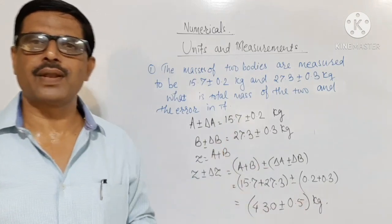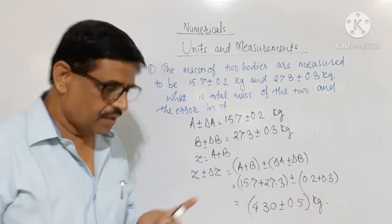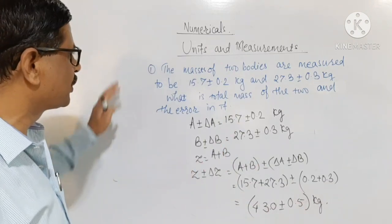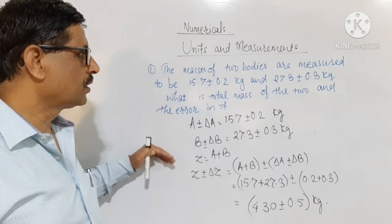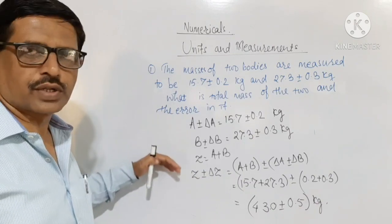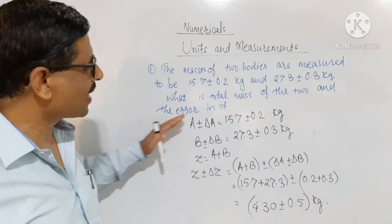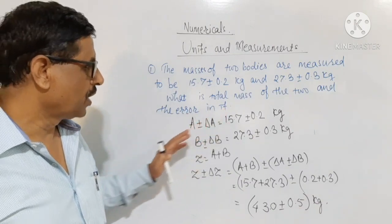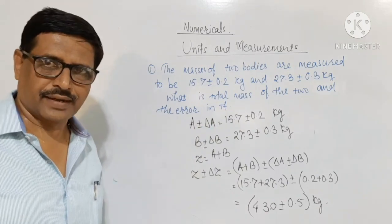This is a very simple numerical in which we have to find out the total sum of the masses of the two bodies and the error in it.